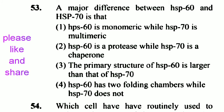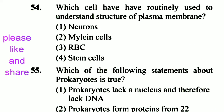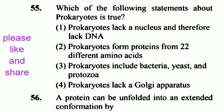Question 53: What is a major difference between HSP60 and HSP70? Option 4 is right: HSP60 has two folding chambers while HSP70 does not. Question 54: Which cell has been routinely used to understand the structure of the plasma membrane? RBC. Option is right.